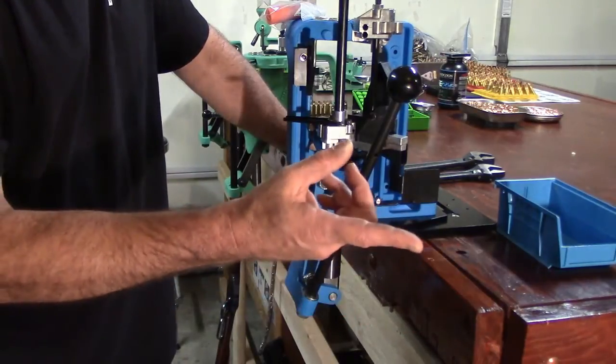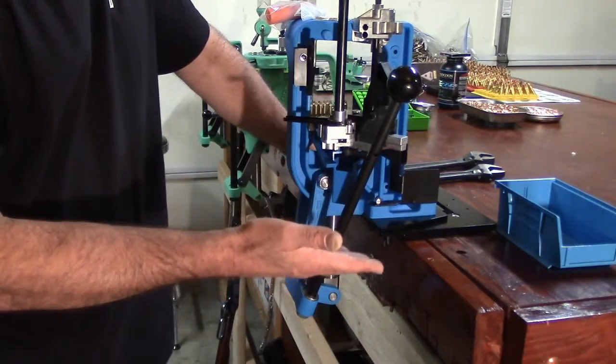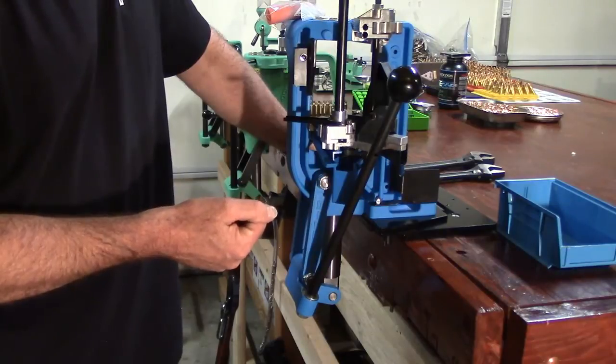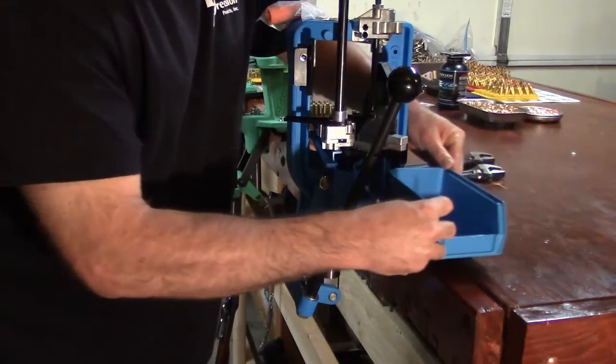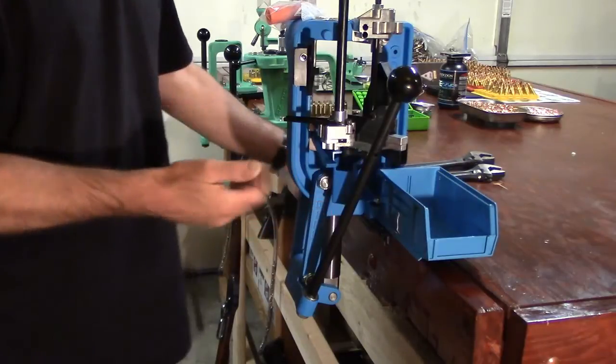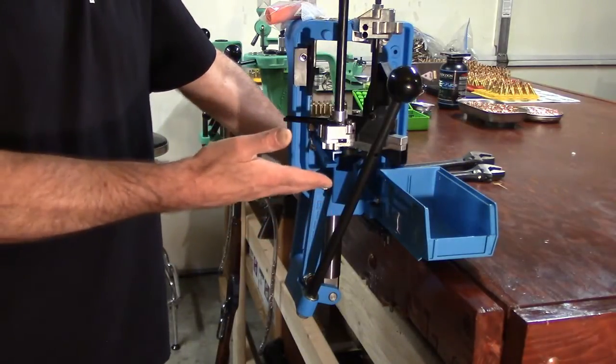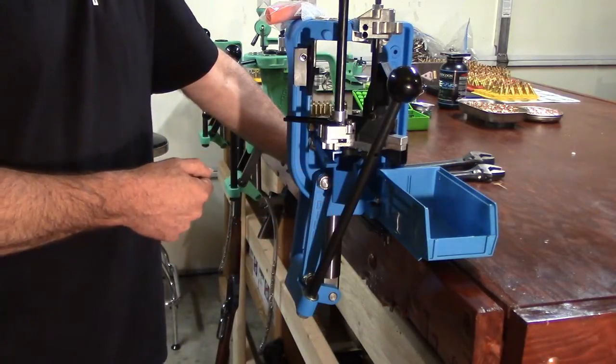So now that we understand that, you guys want to see what that bin looks like? Here we go. Simply slides on like that and you are in the business of catching completed cartridges.